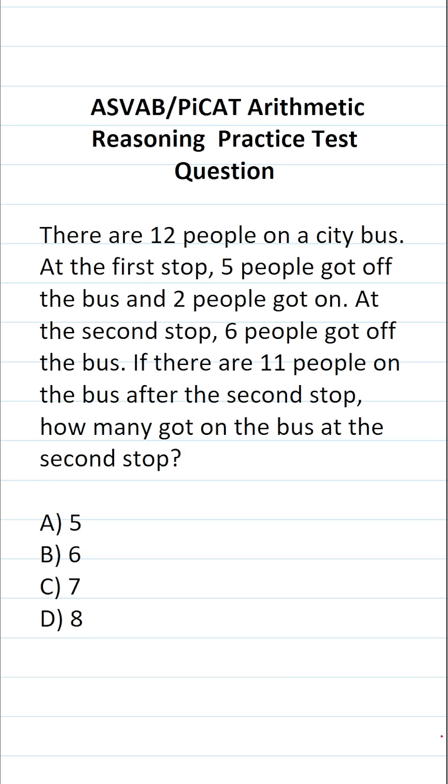All right, so let's work through this step by step. We know initially there are 12 people on the bus, and at the first stop, five people got off the bus. That's going to be 12 minus five. 12 minus five is seven, and then two people got on. So that's going to be seven plus two. Seven plus two is nine.